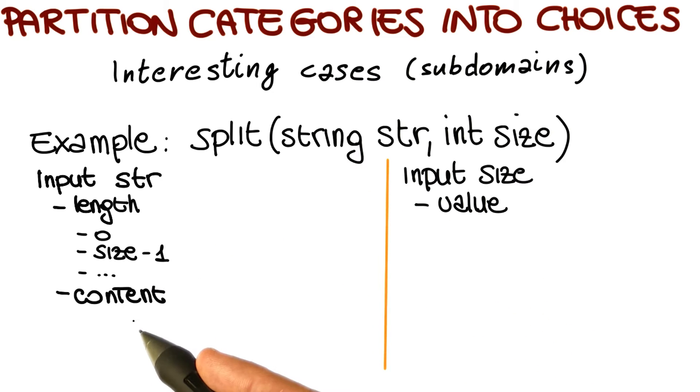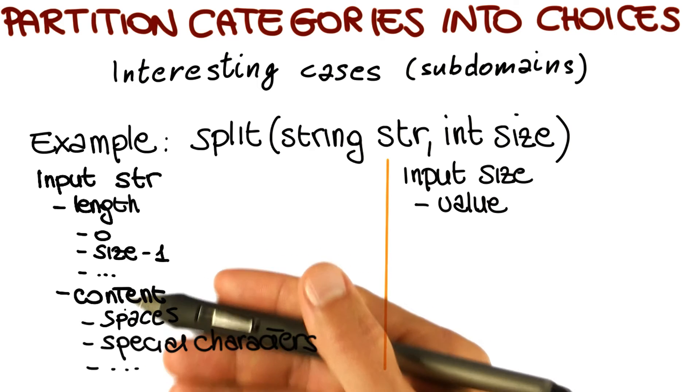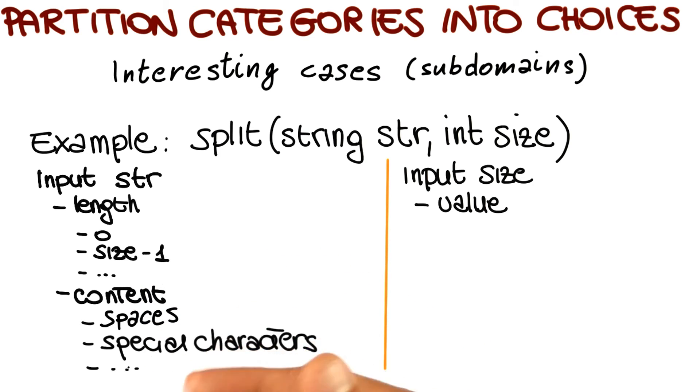Let's move to considering the content. What are the interesting cases when we think about the content of the string? A possible interesting case is a string that contains only spaces, because split might treat spaces in a special way. Similarly, a string that contains special characters, like non-printable characters, tabulation characters, or newline, might also be an interesting case. Here you want to put all the interesting cases that you can think of when you consider the content of a string.